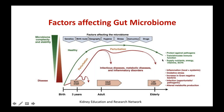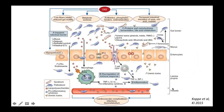A healthy microbial community protects against pathogens, trains and stimulates immune function, and supplies nutrients, energy, vitamins, and short-chain fatty acids. But in a disease state you have inflammation — either local or systemic — oxidative stress, an increase in gram-negative bacteria, infections which could be pathogenic or opportunistic, and alteration in production.